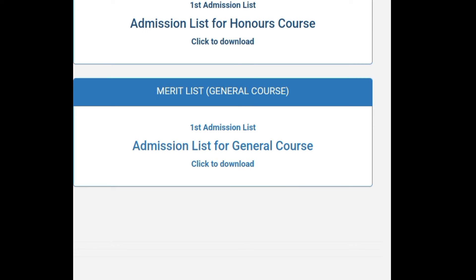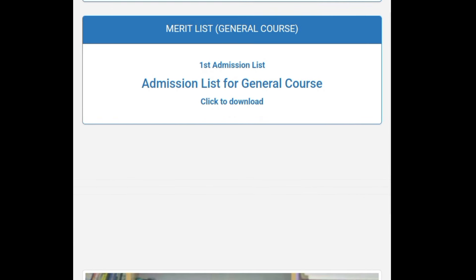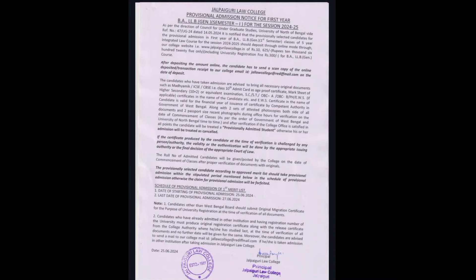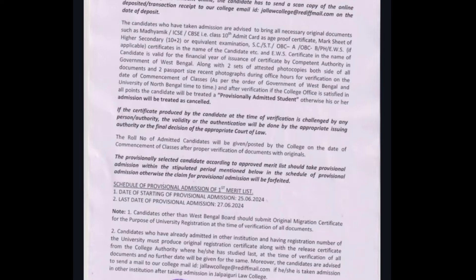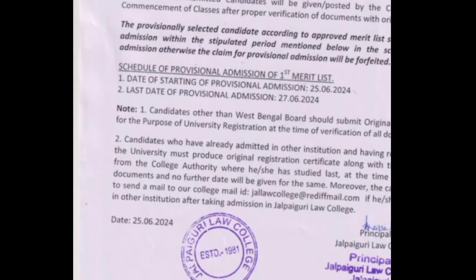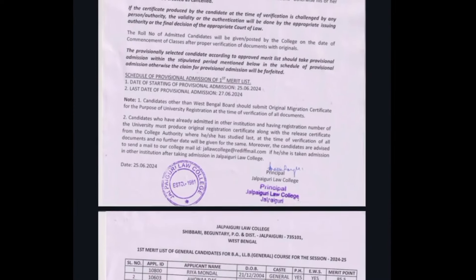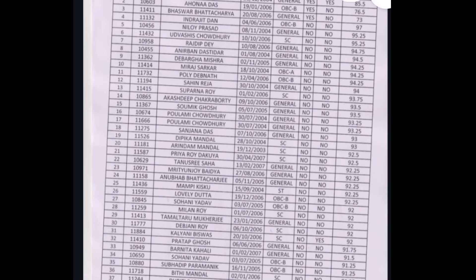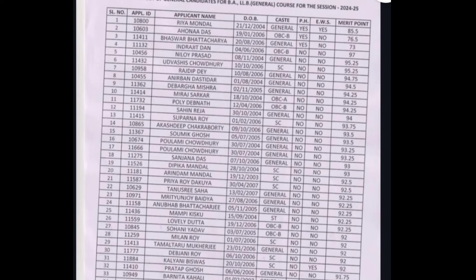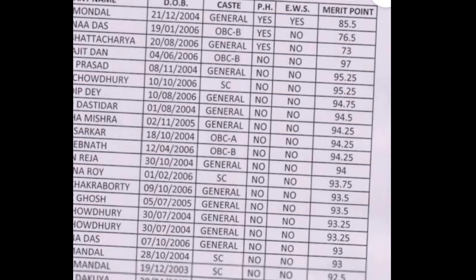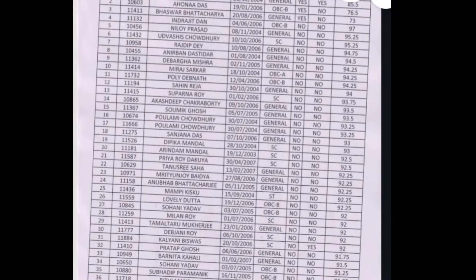You can see the honours course list. We have also seen the general course. There is important information about the general course names and important dates. The first merit list covers both the general course and honours course — the rank and list are shown here.